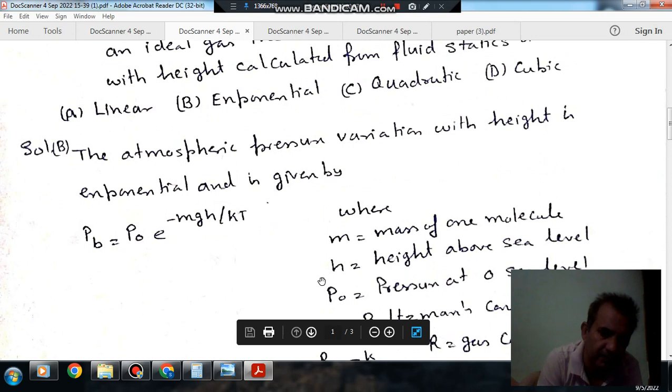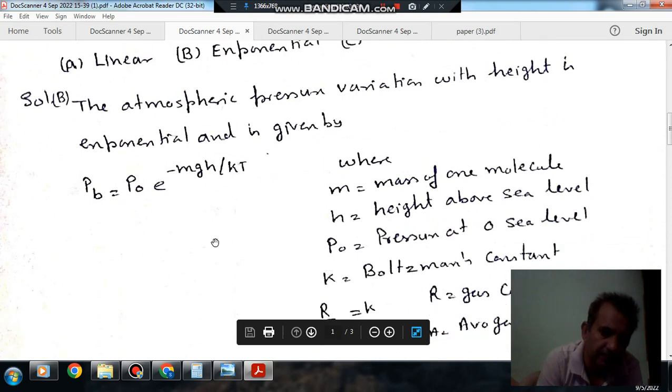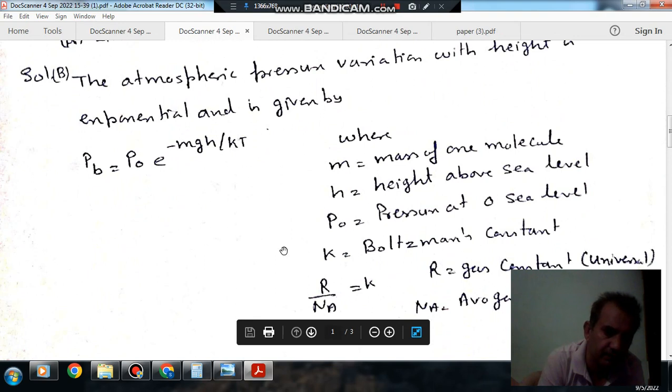Where h is the height above sea level, P0 is pressure at zero sea level, and K is Boltzmann constant.